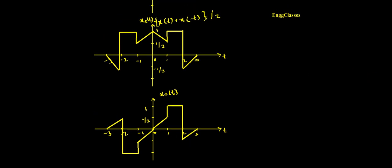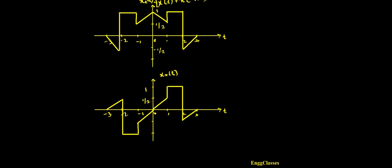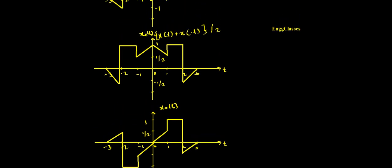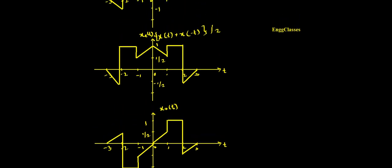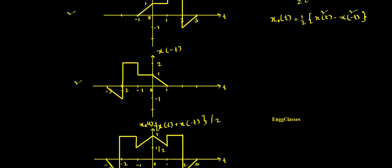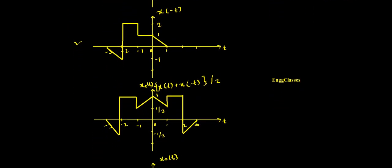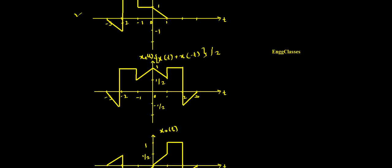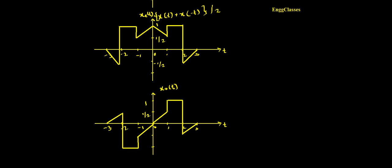The even part is a symmetric signal and the odd part is an anti-symmetric signal. This is the numerical wherein I have explained how to sketch the even and odd parts of a given signal, step by step. I hope you have understood. If there are any doubts, please let me know in the comment section. Thank you so much for watching.